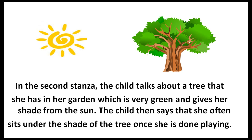In this stanza, the child talks about a tree that she has in a garden, which is very green, and it gives her shade from the sun. The child then says that she often sits under its shade once she's done playing.